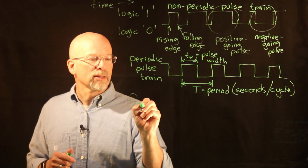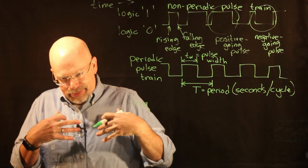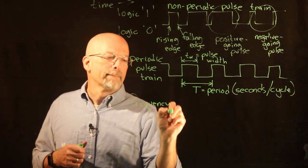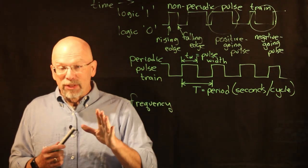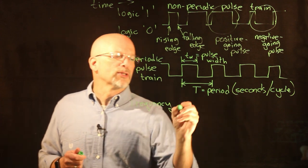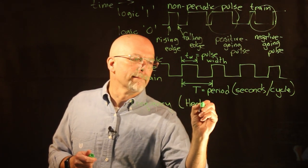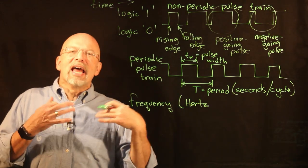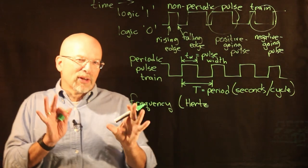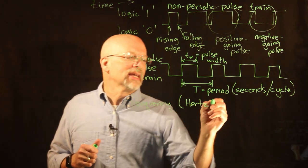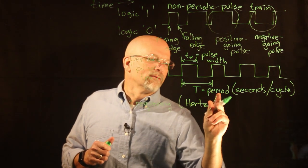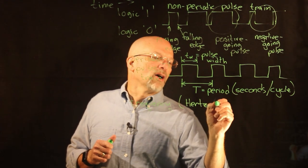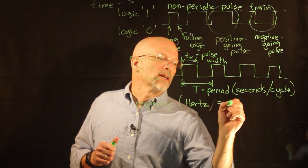Frequency typically is represented in units of hertz. Hertz actually has another name—there's another way of defining this unit. It could also be called cycles per second.